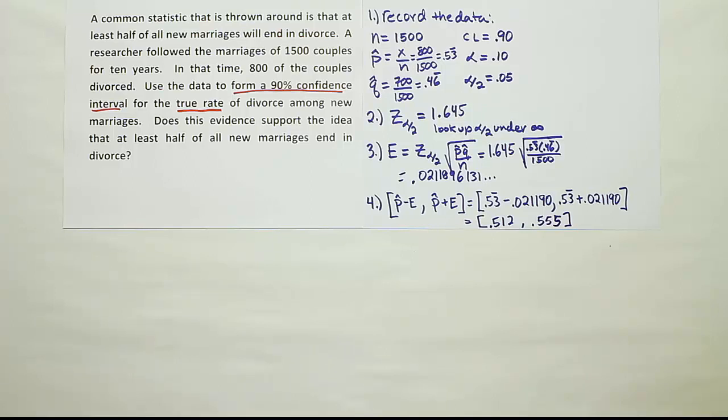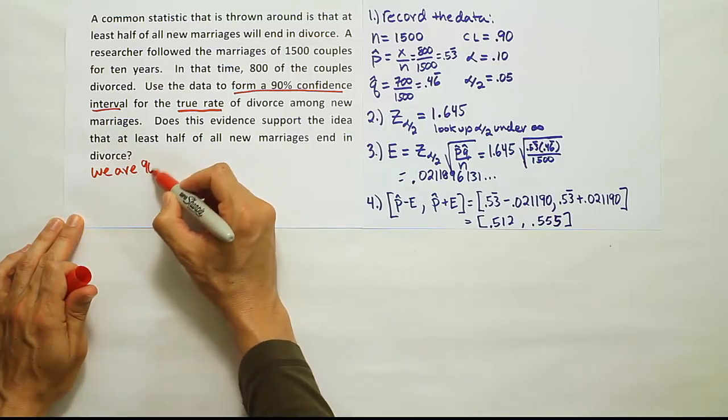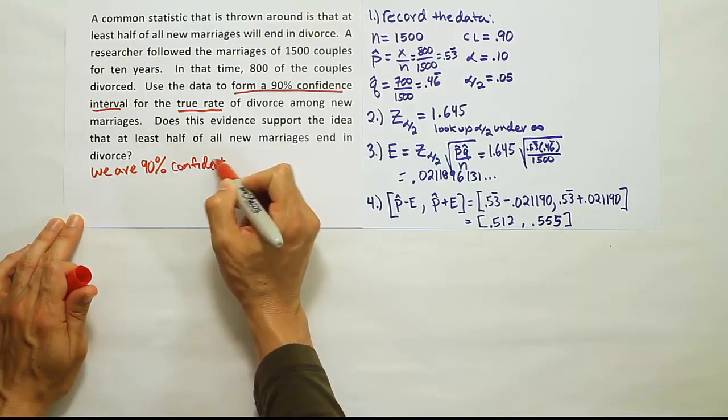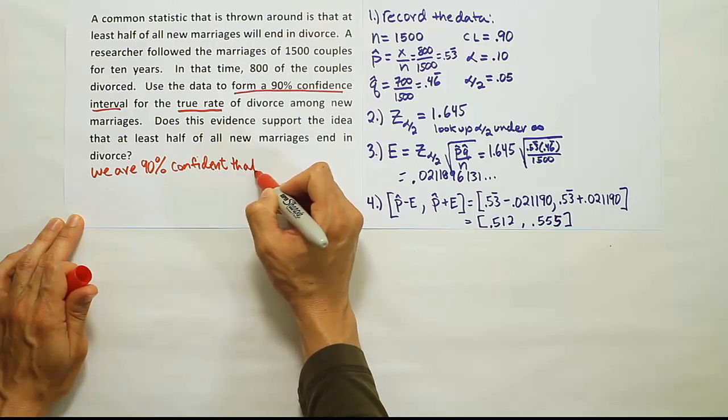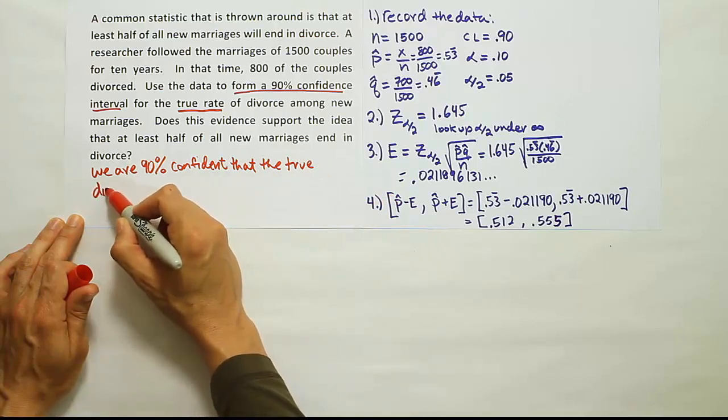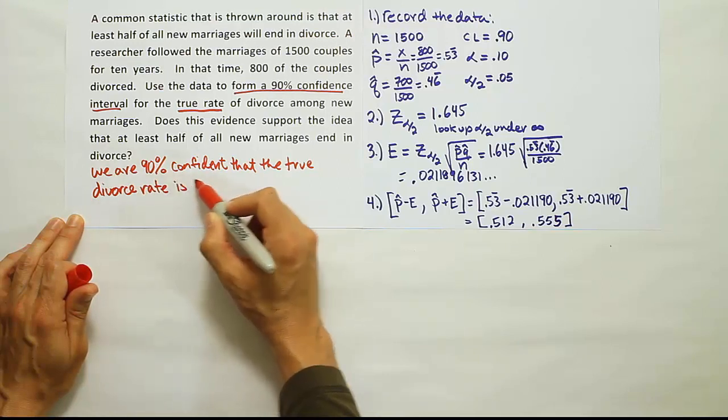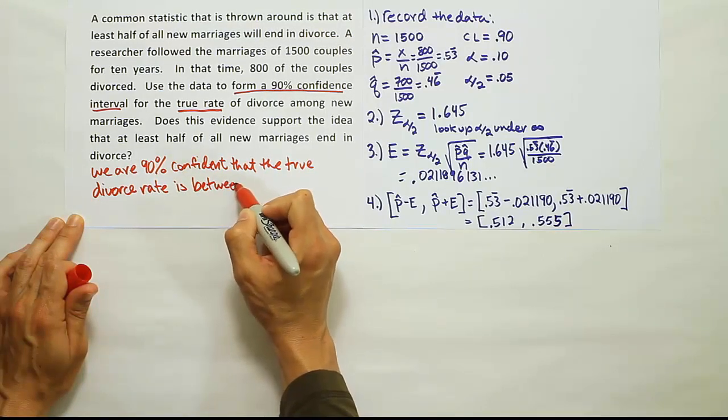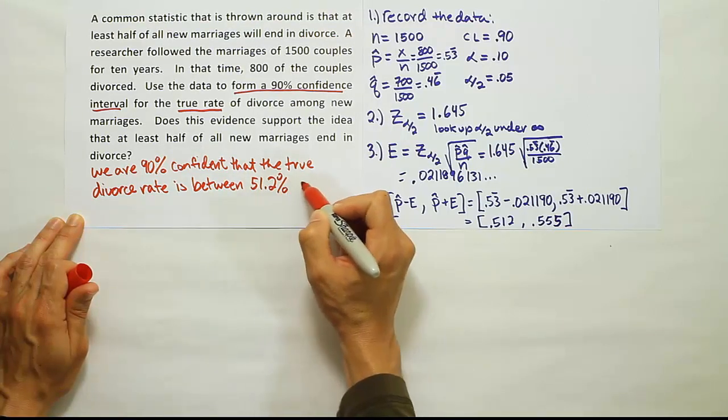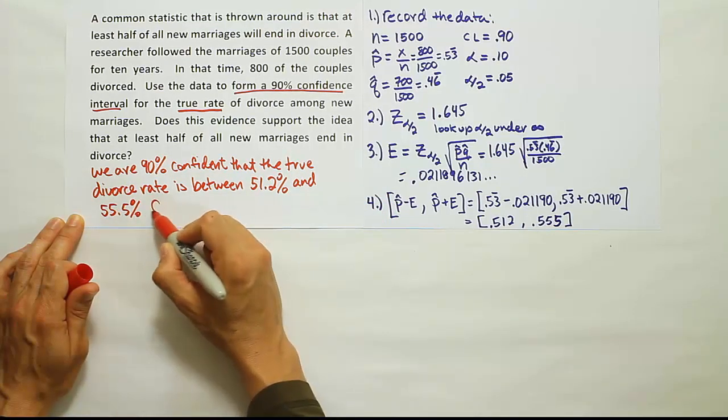And then finally, our wording to our problem, which is going to say we are 90% confident that the true divorce rate is between 51.2% and 55.5% for new marriages.